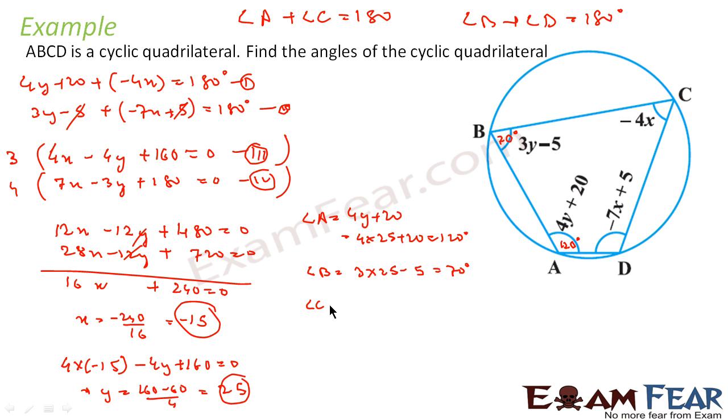Angle C is nothing but minus 4x, that is minus 4 into minus 15, that is 60. So angle C is nothing but 60 degrees.